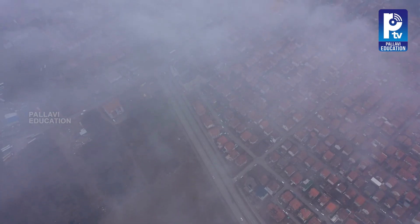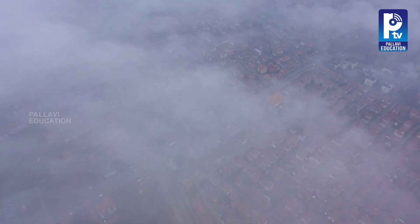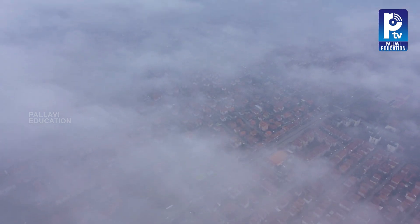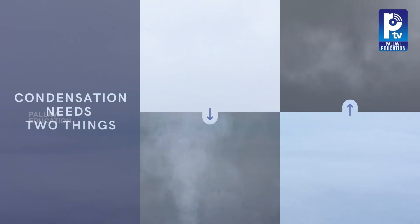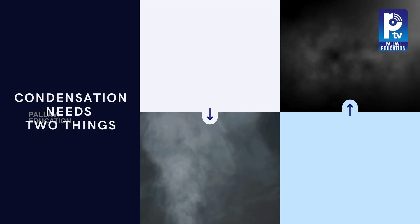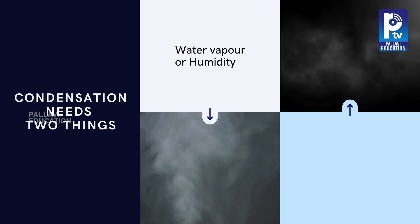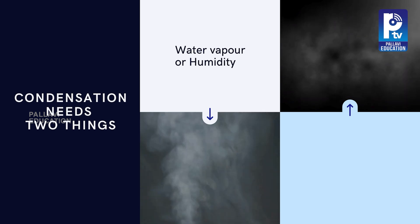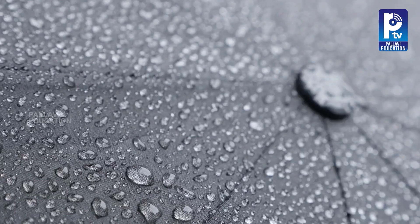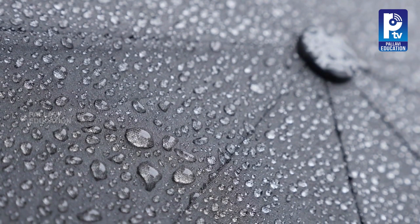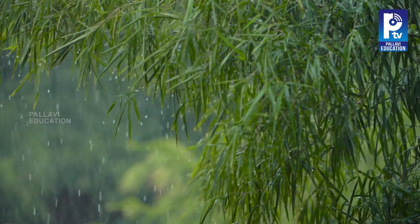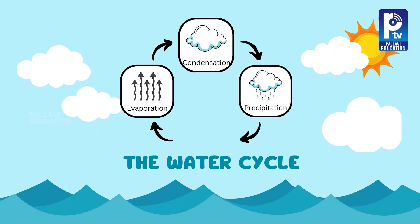Also, in nature, when warm, humid air rises up and cools, the water vapor condenses around dust particles to form tiny droplets. And that's how clouds are born. So, condensation needs two things: water vapor or humidity, and cooling of that vapor. Without both, condensation won't happen. This simple process plays a huge role in bringing rain, forming clouds, and keeping the water cycle moving.